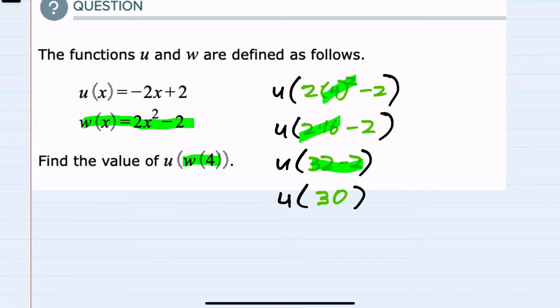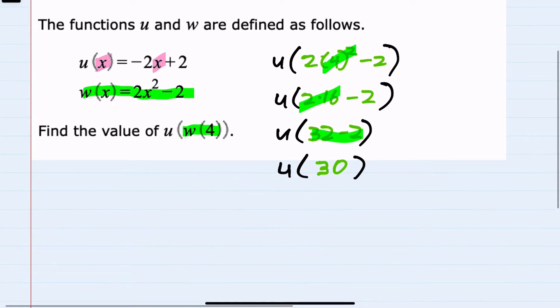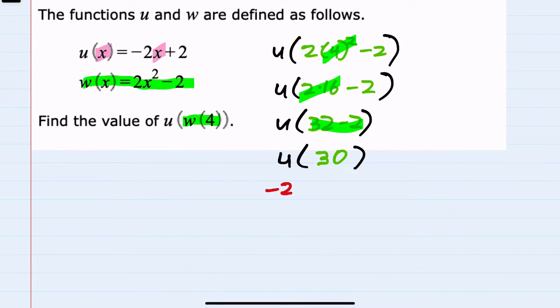And now we have u of 30. So looking at our u function, we will replace x with 30. This means we will have negative 2 times 30 plus 2.